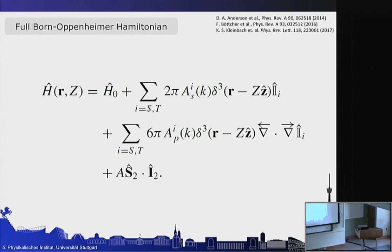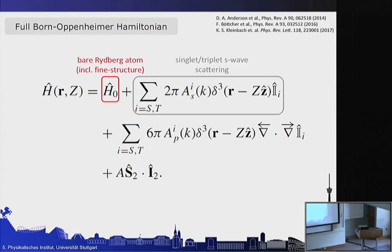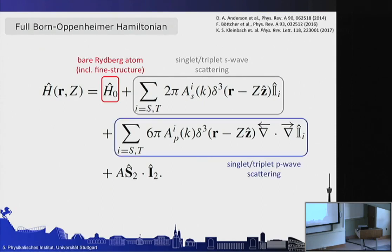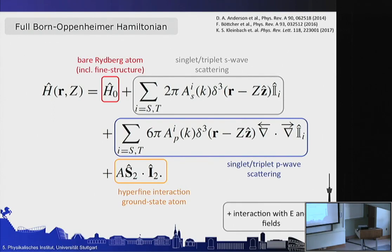The full Hamiltonian needed to calculate Born-Oppenheimer potentials including all spin degrees of freedom consists of: the bare Rydberg atom including its fine structure; the singlet and triplet S-wave scattering via the Fermi contact potential; the singlet and triplet P-wave scattering; the hyperfine interaction of the ground state atom; and the interaction with external electric and magnetic fields — the last being an instrumental requirement since our setup always has a magnetic field present.